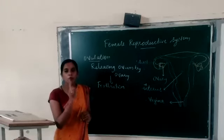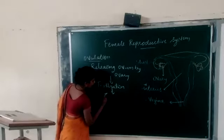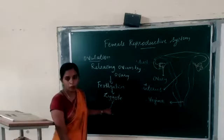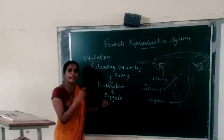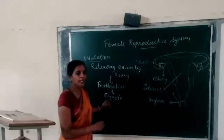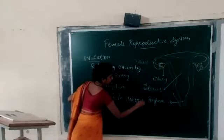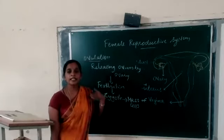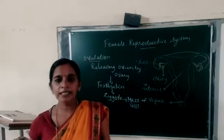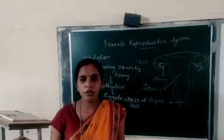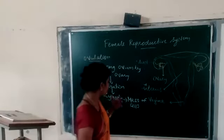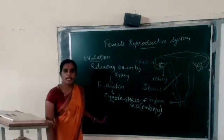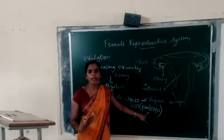After fertilization, a zygote is formed. This zygote undergoes continuous repeated division and forms a mass of cells. This mass of cells is differentiated in nature — each cell differentiates into some tissues, organs, or organ systems. This differentiated mass of cells is called the embryo.